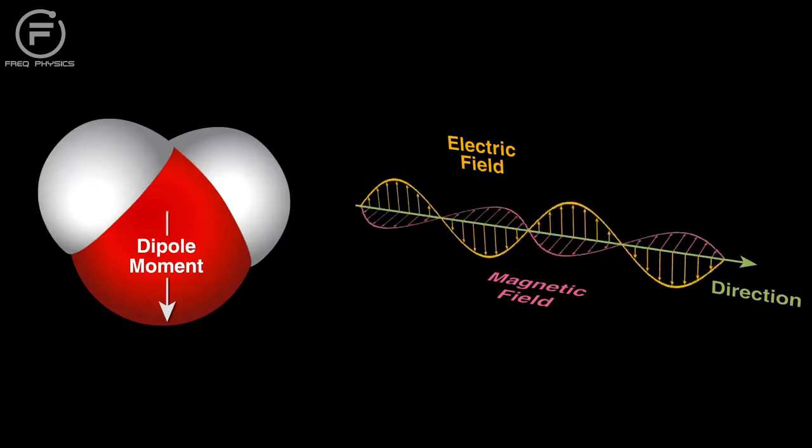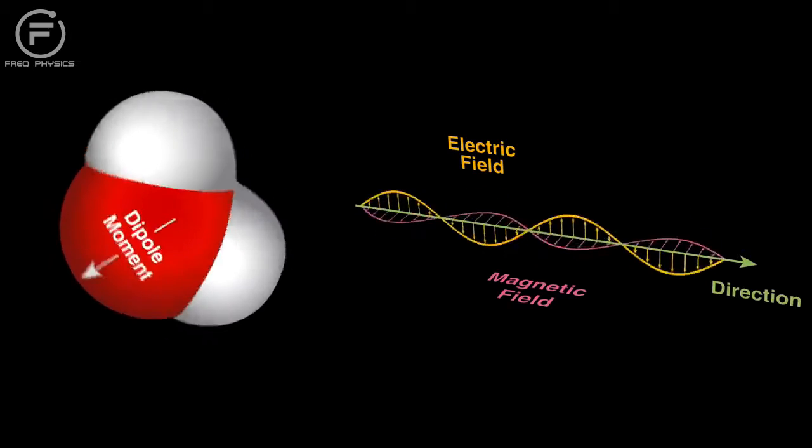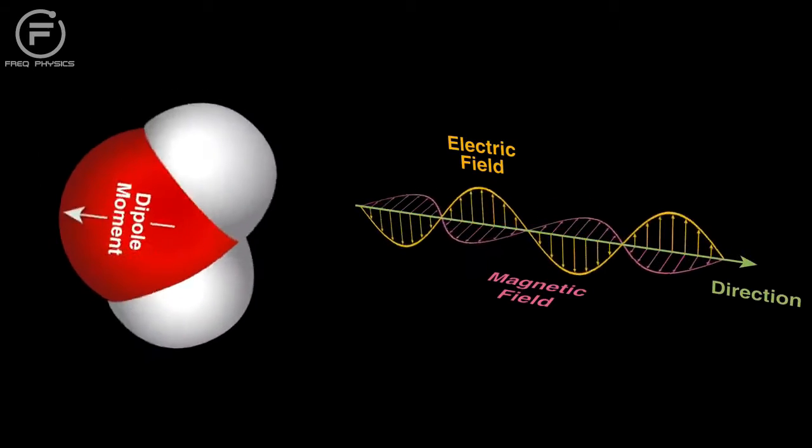Water will try to align with the radiation's electric field. The changing field rocks the water molecules back and forth rapidly, and molecular friction from this creates heat as the motion disrupts the hydrogen bonds between neighboring water molecules.